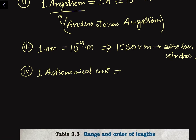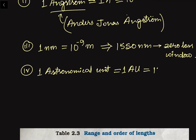The fourth unit is the astronomical unit (AU). One astronomical unit is the average distance of the Sun from the Earth. The orbit of the Earth around the Sun is elliptical, so we take the average distance, which equals 1.49 × 10 to the power 11 meters.